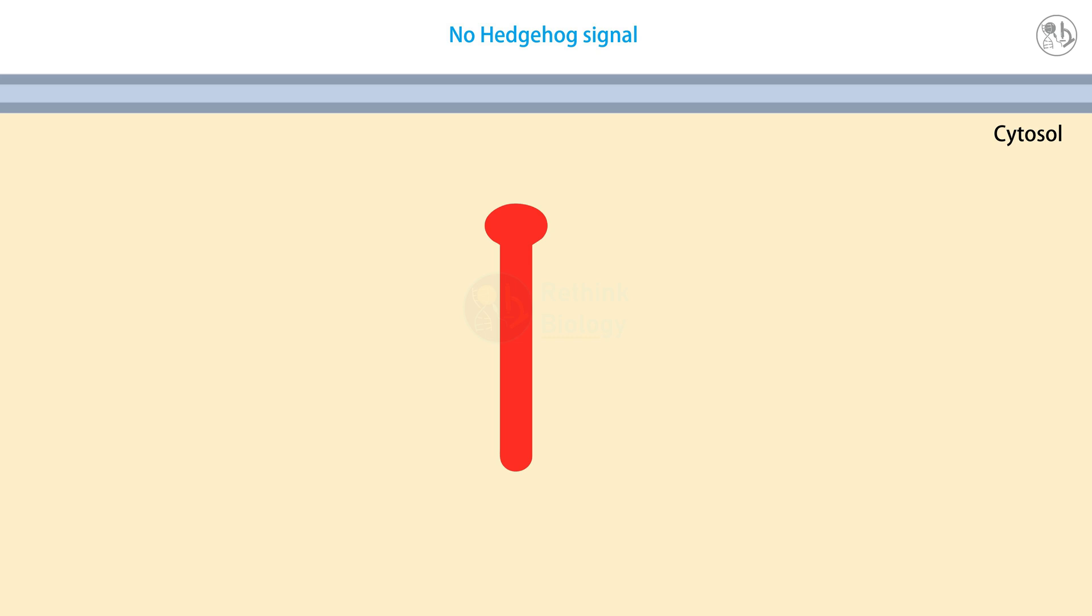Ci, a protein that can activate gene expression, is constantly processed and degraded in the cytoplasm. It is bound by a complex of proteins that includes fused, costal-2, and costal-2 recruits the three protein kinases PKA, GSK3, and CK1.